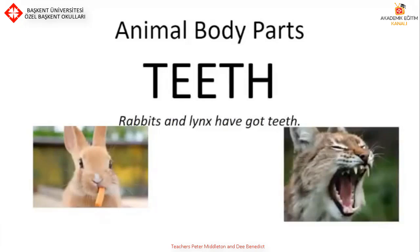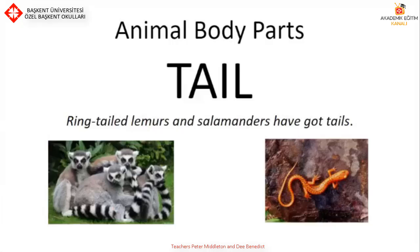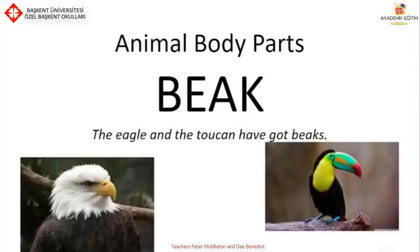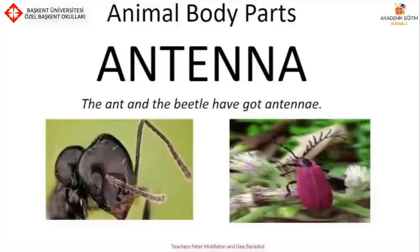Rabbits and lynx have got teeth — and so do we. Ring-tailed lemurs and salamanders have got tails. Look at the peacock — it has got feathers. How beautiful they are! An eagle and a toucan have got beaks. You can also have some birds that have bills. The ant and the beetle have got antennae.